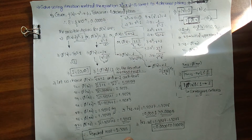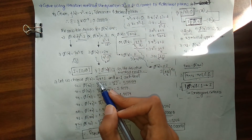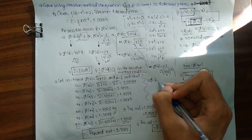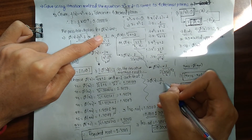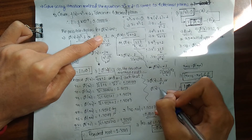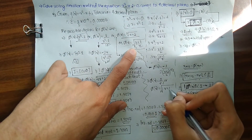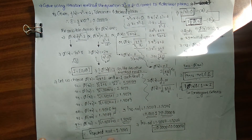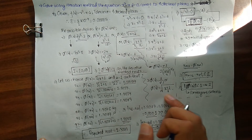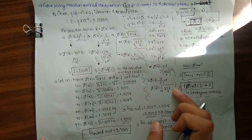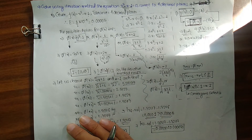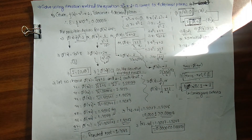So in this way, using the iteration method with φ(x) = ∛(x + 1), we found the required root to be 1.3247. You could also choose φ(x) = 1/(x² - 1) or φ(x) = √((x + 1)/x) with x₀ = 1 and follow the same steps; you will arrive at the same root 1.3247. If you like the video, please subscribe to the channel, and if you have any queries, comment below.